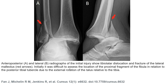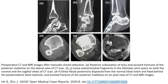Initially, it was difficult to assess the location of the proximal fragment of the fibula in relation to the posterior tibia. The lateral view of the CT scan demonstrates posterior subluxation of the posterior malleolus.